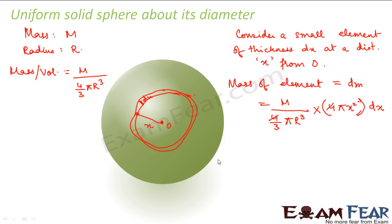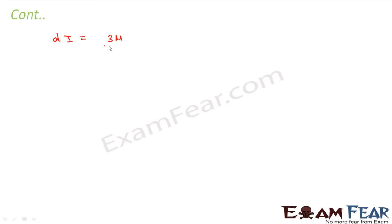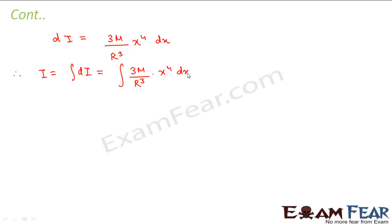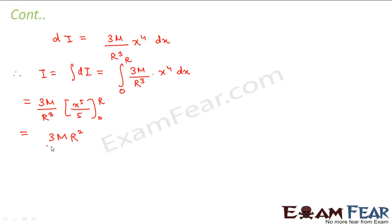The 4s cancel, giving dm = (3M / R³) · x² dx. Therefore the moment of inertia of this small element is di = dm · x² = (3M / R³) · x⁴ dx. Integrating from 0 to R gives (3M / R³) · [x⁵/5] from 0 to R, which simplifies to 3MR² / 5.